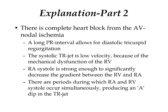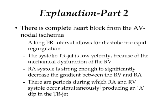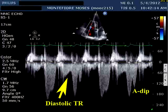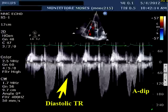Sometimes RA systole is occurring at the same time as RV systole because of the complete heart block. When that happens, RA pressure increases, thereby decreasing the gradient from the right ventricle to the right atrium and giving that notch — what I call an 'A dip' or atrial dip — in the TR signal. Looking at the Doppler signal, the systolic TR signals all have little notches in different places corresponding to those periods where RV systole and RA systole are happening simultaneously.